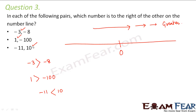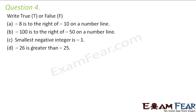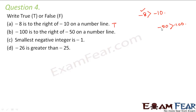Question number four: true or false. 'Minus eight is to the right of minus ten on a number line' — minus eight is greater than minus ten, so minus eight does lie to the right of minus ten. This is TRUE. 'Minus one hundred is to the right of minus fifty on a number line' — minus fifty is greater than minus one hundred, so minus fifty lies to the right, not minus one hundred. This is FALSE.